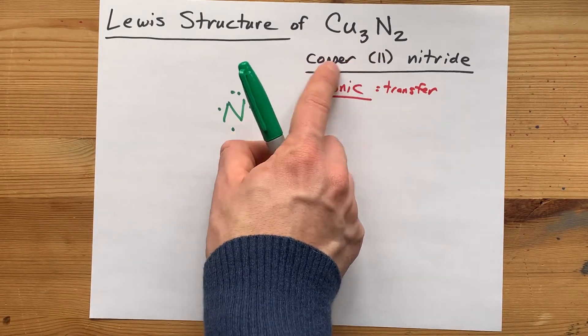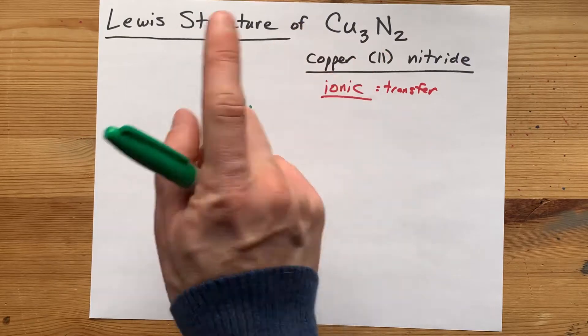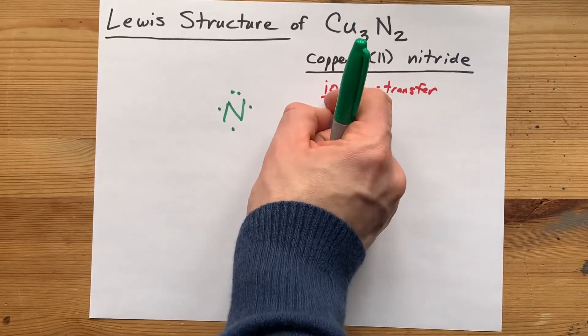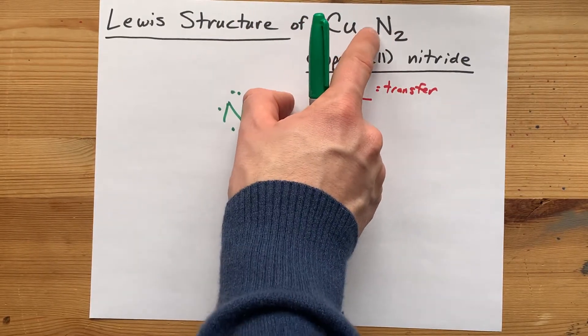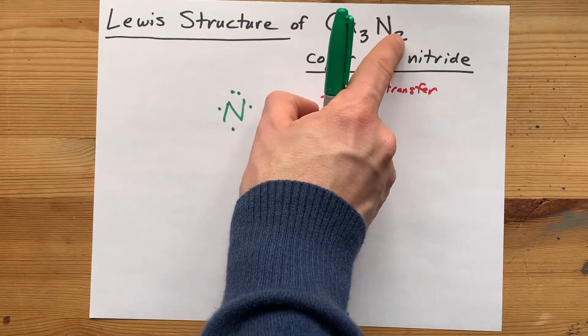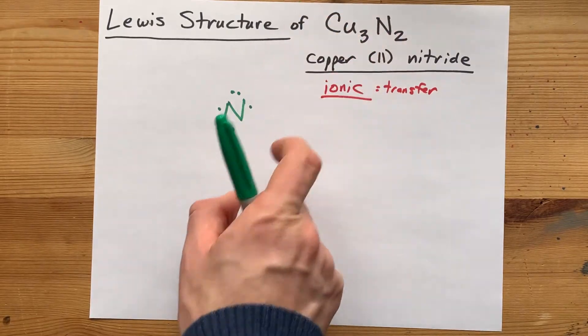The name here implies that the charge is two, but it's also here in the formula. This three came from the charge on N. This two came from the charge on copper.